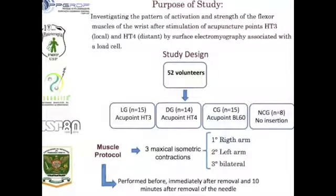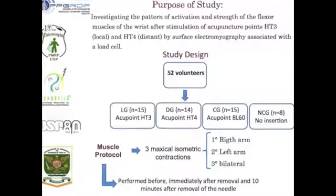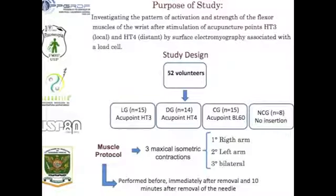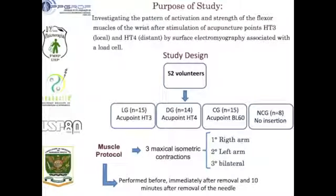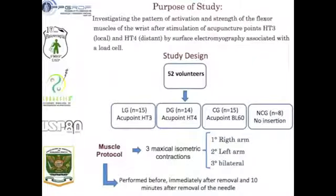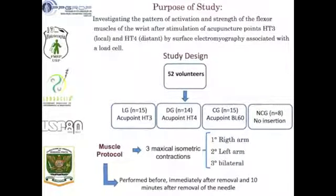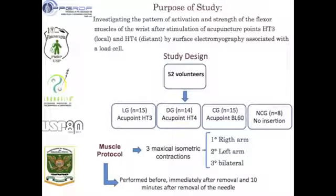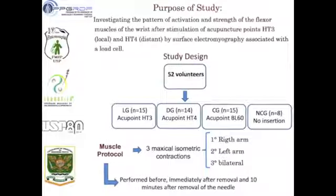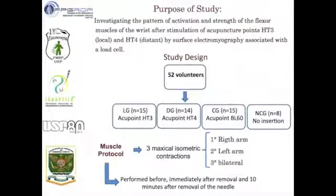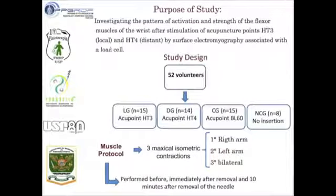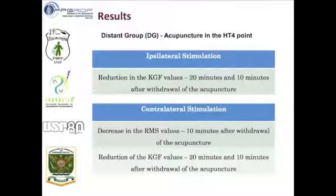For the evaluation of the results, we used surface electromyography and load cells. Electromyography electrodes were placed on the muscle belly of the wrist flexors, and the volunteers' hands were connected to the force transducer, enabling the analysis of muscle activation and forces during maximum isometric contraction on the flexion of the wrist.